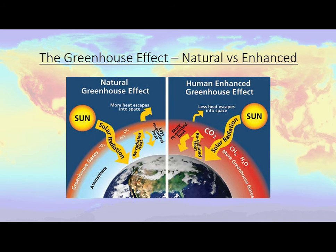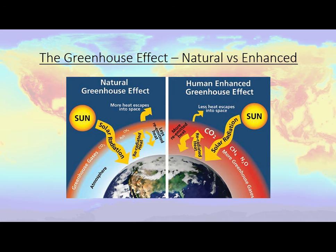The greenhouse effect involves greenhouse gases — gases floating around the atmosphere that have always been there, whether we're here or not. Things like carbon dioxide (CO₂), nitrous oxide (N₂O), and methane (CH₄). These greenhouse gases have always made up part of our atmosphere, and they are actually the reason that life on Earth is possible.